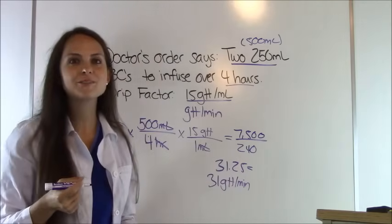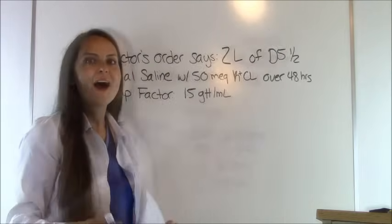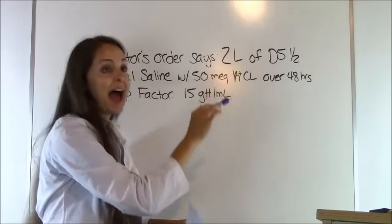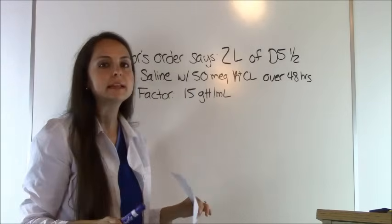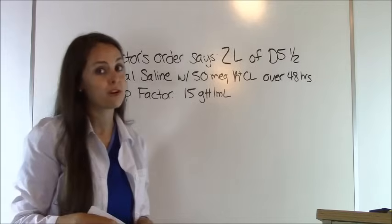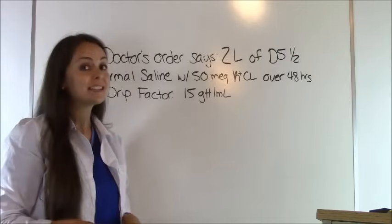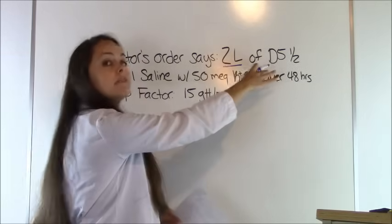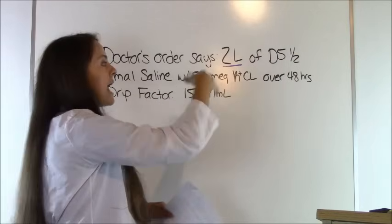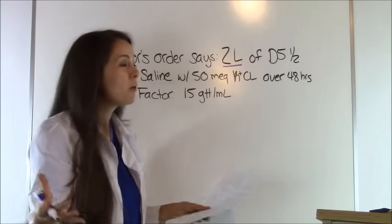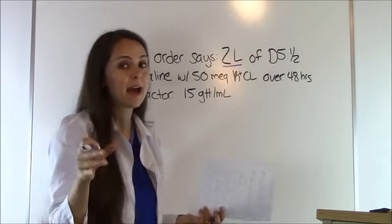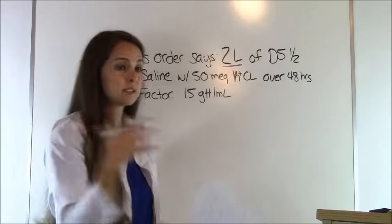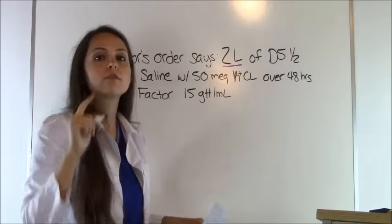Let's go to problem number 4. Doctor's order says 2 liters of D5 half normal saline with 50 milliequivalents of potassium chloride over 48 hours. The important parts: 2 liters ordered. The 50 milliequivalents is just telling you what's been added to the bag — it's insignificant to solving this problem. They want it to go in over 48 hours.